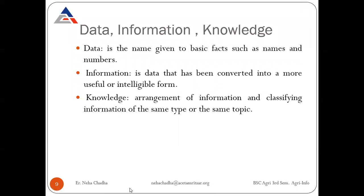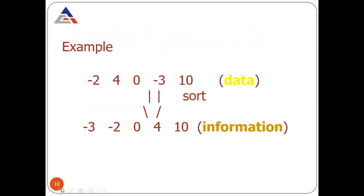Data is a name given to basic facts such as names and numbers. Information is data that has been converted into a more usable form. Knowledge is the arrangement and classification of information of the same type or topic. For example, data might be the numbers -2, 4, -3, 10. Arranging them in ascending order gives -3, -2, 0, 4, 10 — this becomes information. After processing and sorting, you can derive meaningful information from raw data.